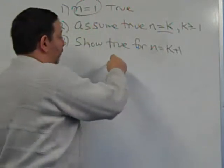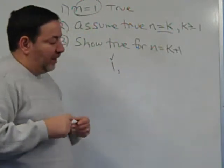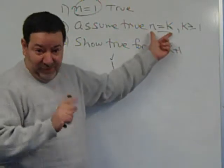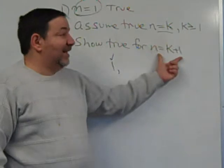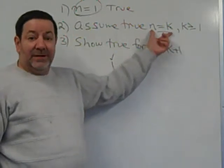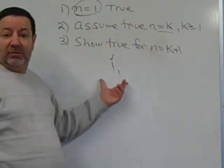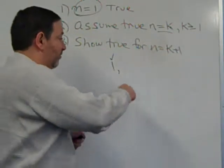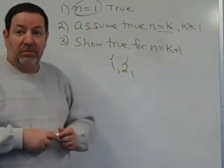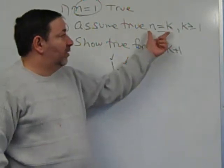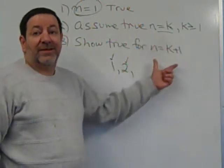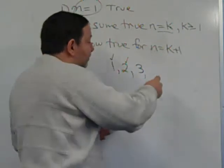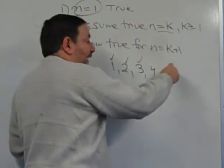Why does this work? We know that it's true for 1. What we showed using steps 2 and 3 is that if it's true for any integer, then it is true for the next integer. If it's true for 7, we show it is true for 8. All we know is that it's true for 1. So if it's true for 1, it's true for the next integer, which is 2. And if it's true for 2, it's true for 3, and so on.